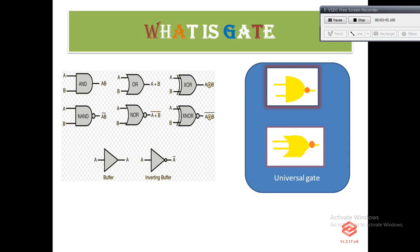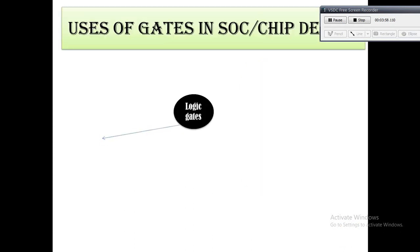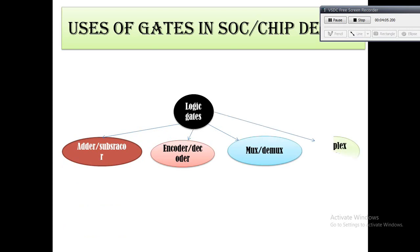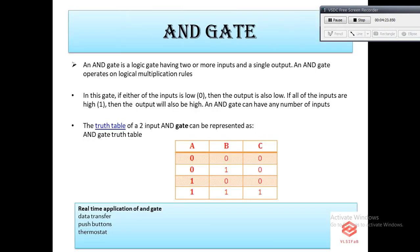We will discuss in detail later why NAND and NOR gates are called universal gates, but briefly, they are called universal because they can realize all binary operations — all basic logic gates can be derived from them. Logic gates are used to build modules such as adders, subtractors, encoders, decoders, multiplexers, demultiplexers, and complex cells.